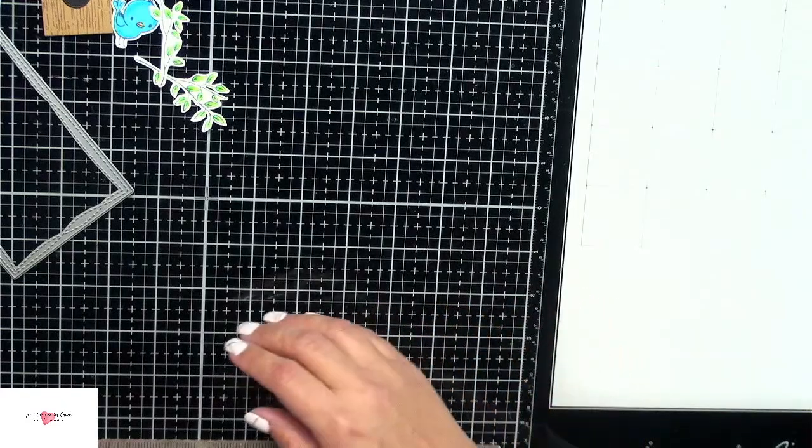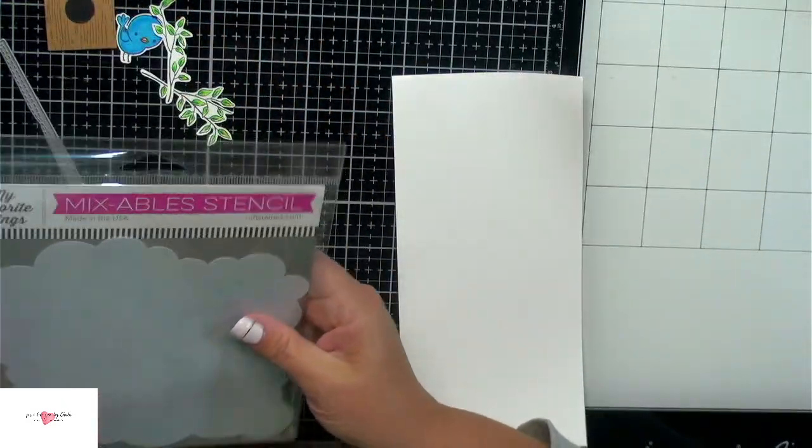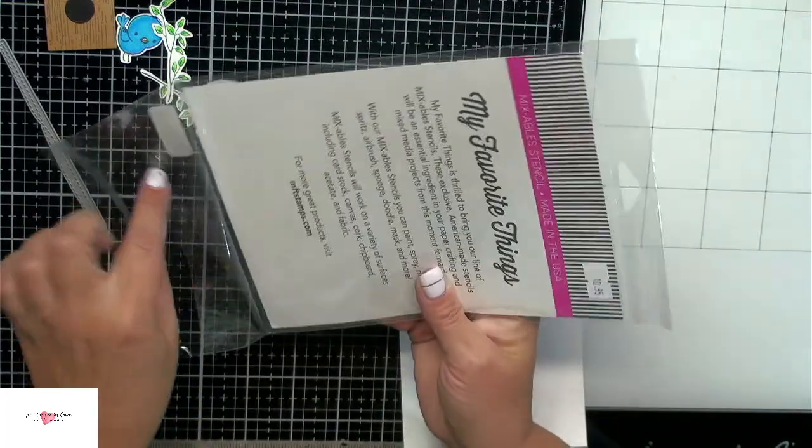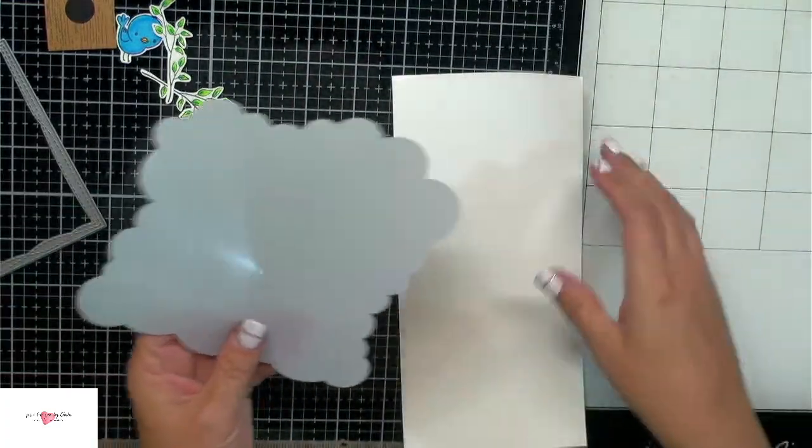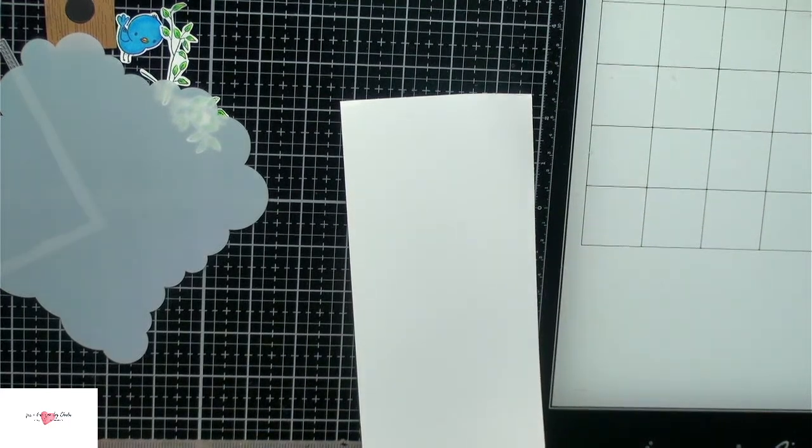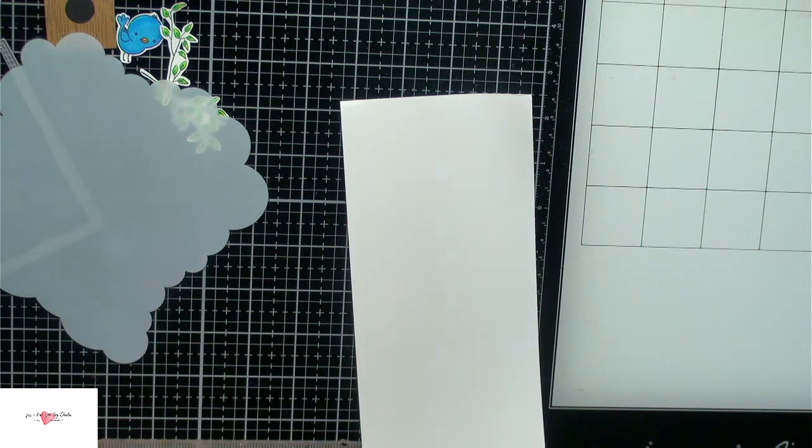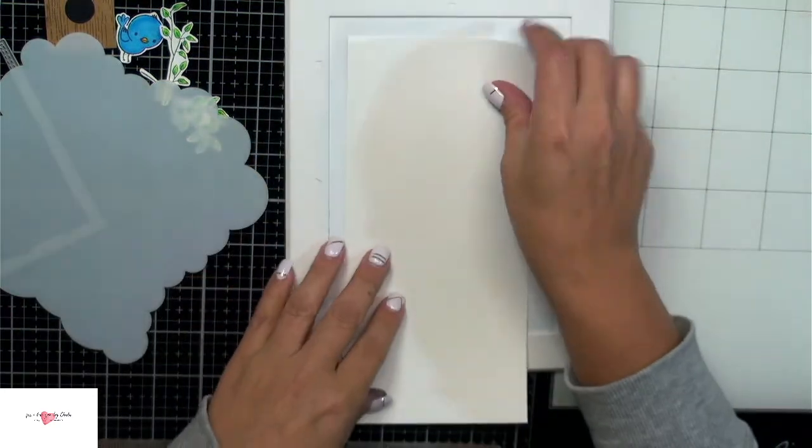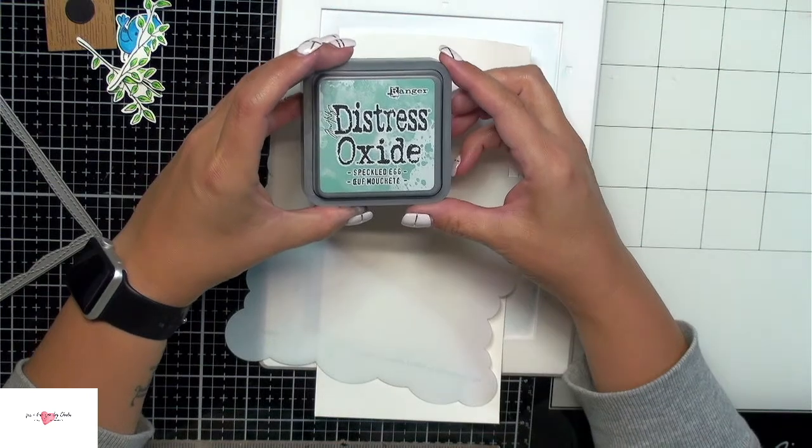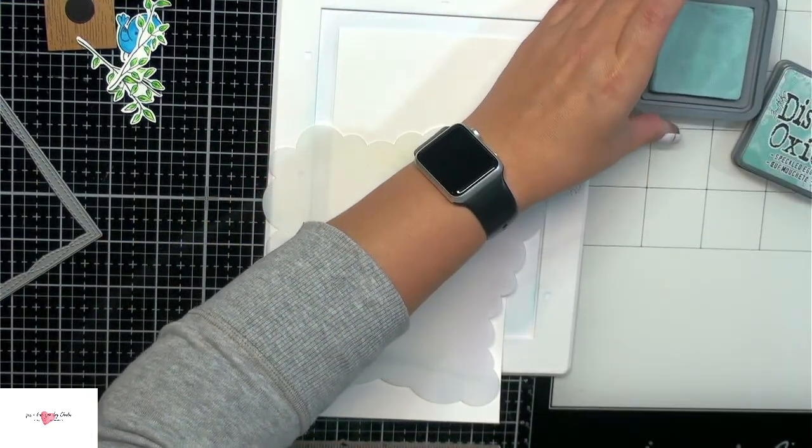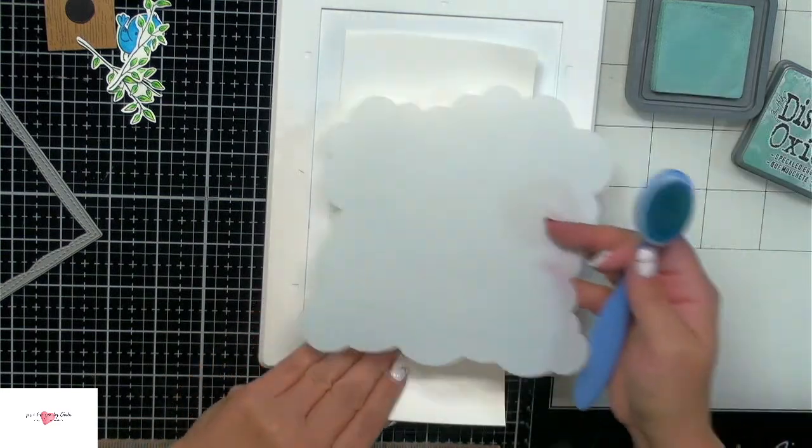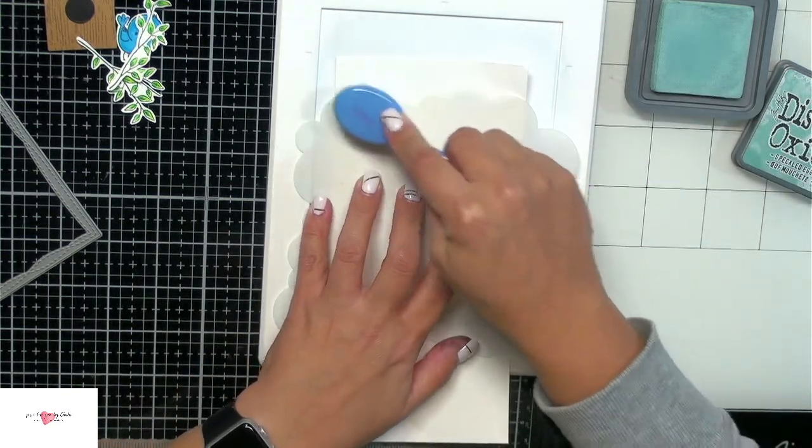Now what I want to do is go ahead and create the background piece where our little elements are going to be sitting on. I'm going to be using this MFT mixable stencil. This is the Cloud Stencil. And this is such a great stencil to use to create beautiful backgrounds for skies. So let's bring out, I'm just going to grab my little Waffle Flower mini media mat. I really like blending on this. And I'm just going to be using some speckled egg to ink blend on the background.